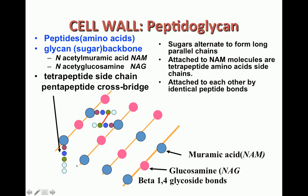The cell wall is the most important part of bacteria. Its most important structure is the peptidoglycan layer, responsible for the shape of the bacterial cell and for preventing osmotic lysis. Without it, water moves inside the cell, causing it to swell and undergo osmotic lysis. Peptidoglycan is made of peptides (amino acids) and glycans (sugars), which constitute the backbone of the cell wall.